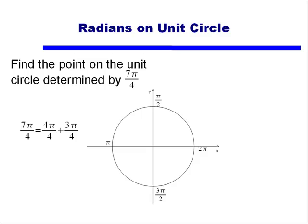And what I like to do is pull out full π's. For instance, 7π divided by 4 is equal to 4π/4 plus 3π/4. And I know that 4π/4 is just going to equal π, because the 4 in the numerator and the 4 in the denominator will divide out.